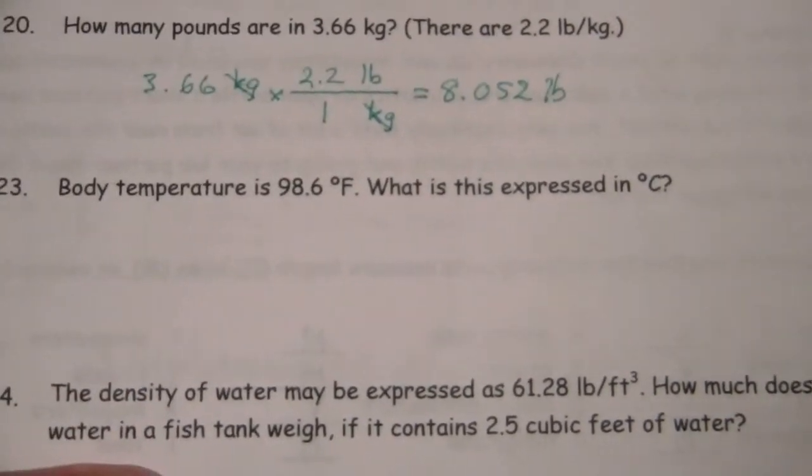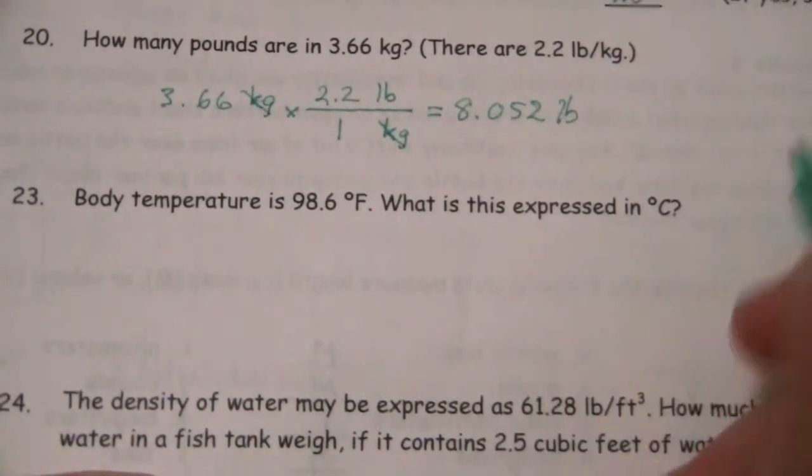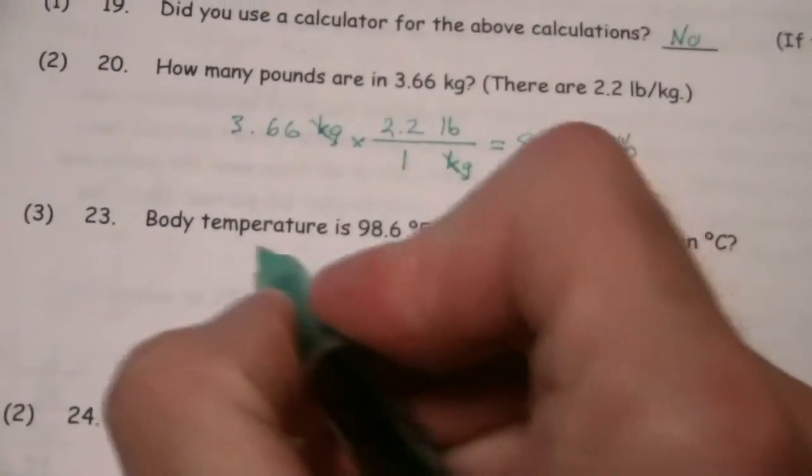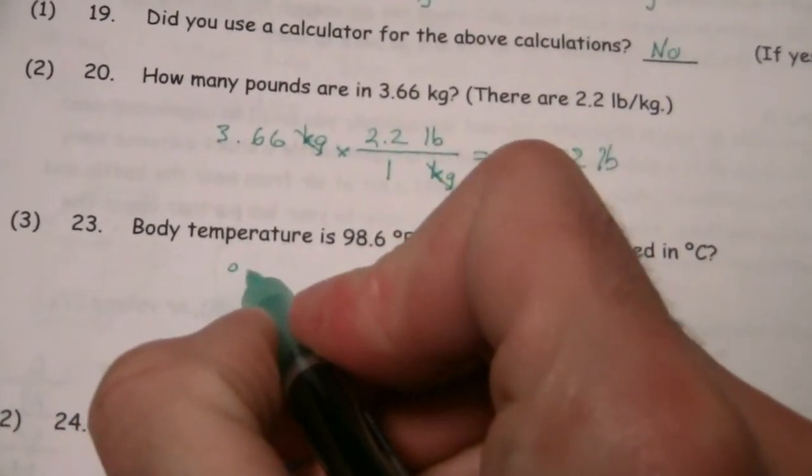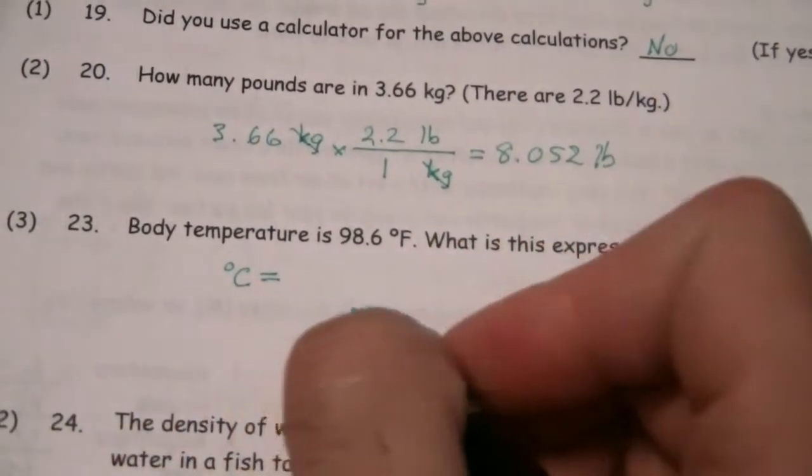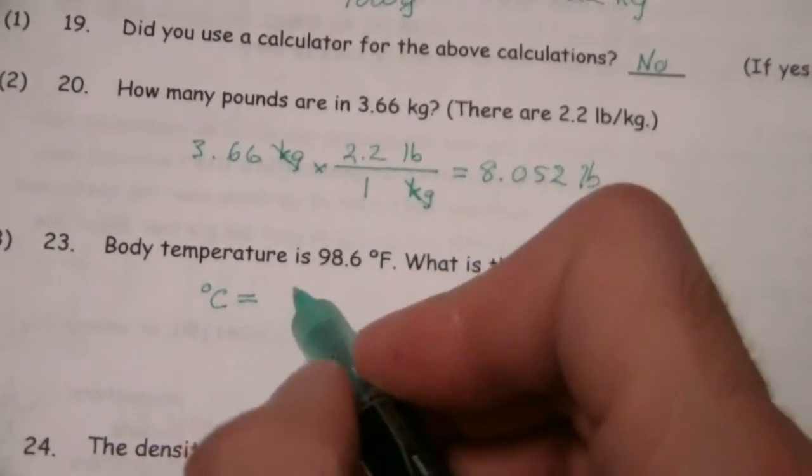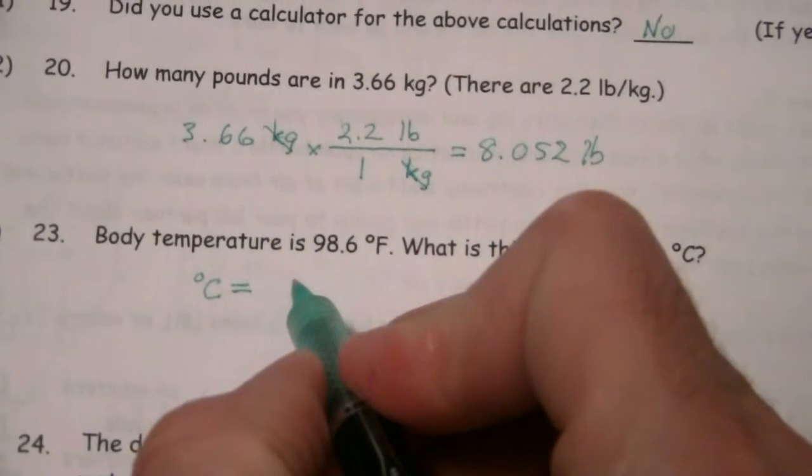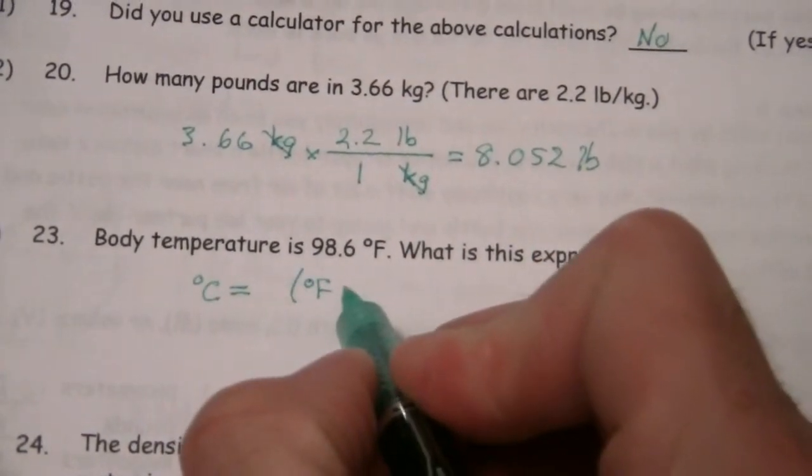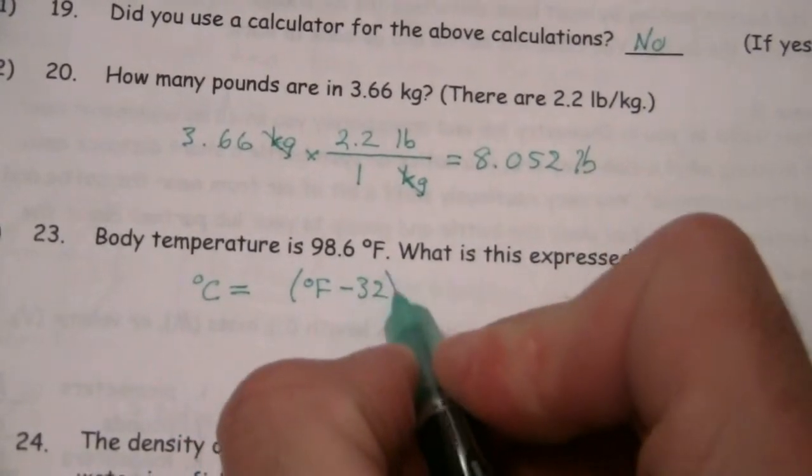The first thing we need to know is the formula for converting Fahrenheit to Celsius. You should hopefully have this memorized. The temperature in Celsius is going to be equal to your temperature in Fahrenheit minus 32 to correct for the freezing point.